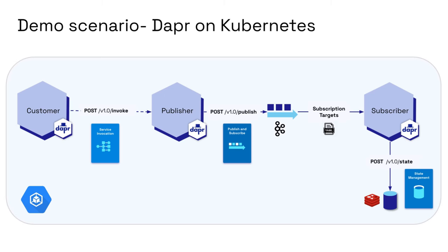Now we'll run the same demo application but targeting a Kubernetes deployment on Google Cloud Platform using Google Kubernetes Engine. Instead of Redis for the PubSub component implementation, we'll switch that out with Kafka — without making any application code changes — to show how Dapr runs on Kubernetes and how the swappable component model works.